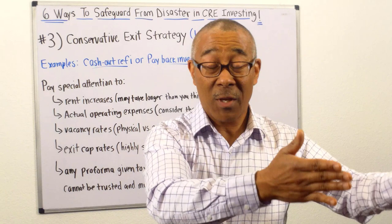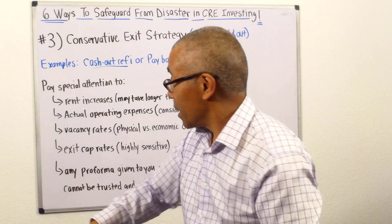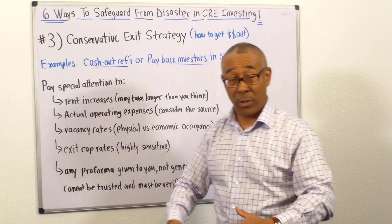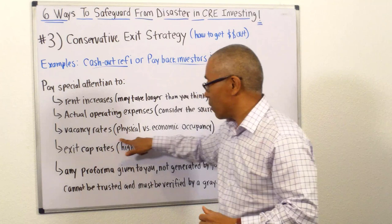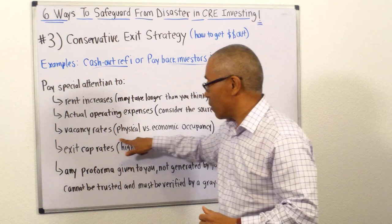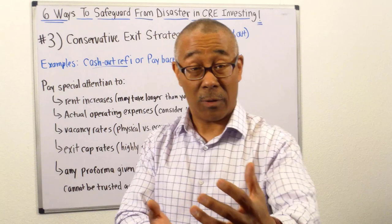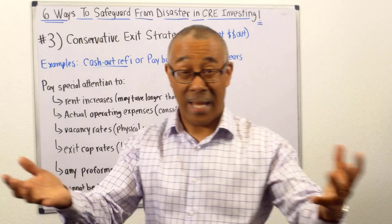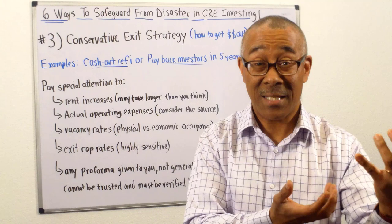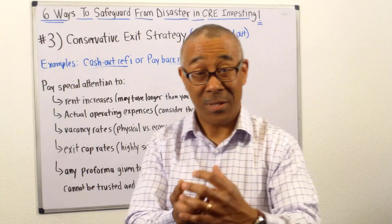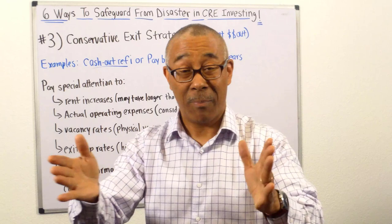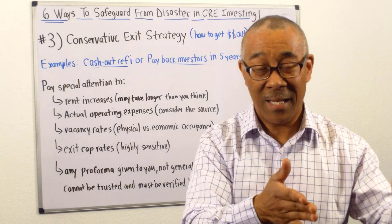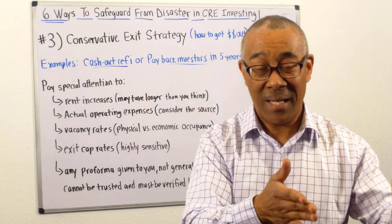To know if you have all the expenses, get advice from someone who's already done it. At our company, we have properties across the U.S. and know what expenses are for almost every type of commercial property. Next, pay special attention to vacancy rates. When you calculate cash flow, understand the difference between physical and economic occupancy. Physical occupancy may be 100% — all 10 units filled — but if only seven people are paying, that's 30% economic vacancy. Don't be fooled by full physical occupancy — ask how many are actually paying.